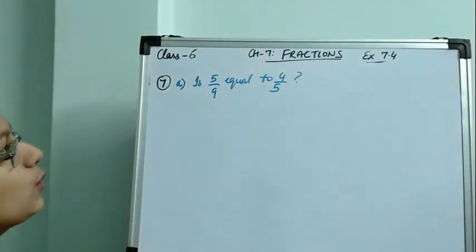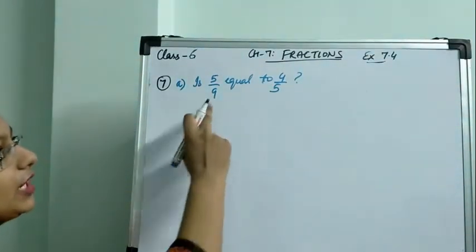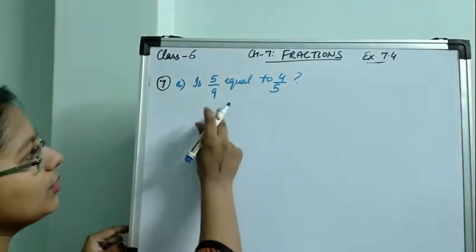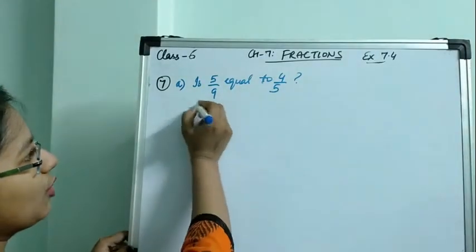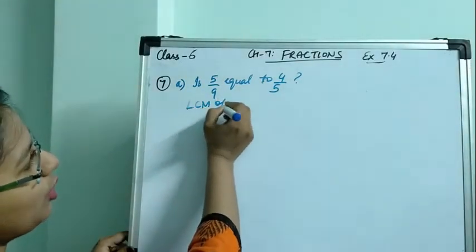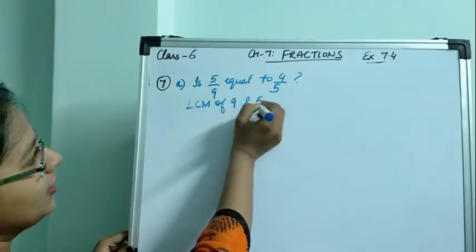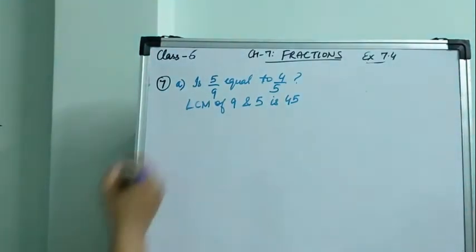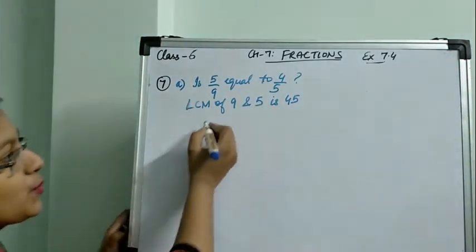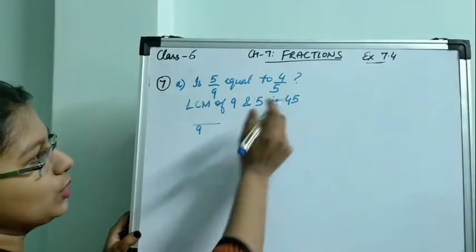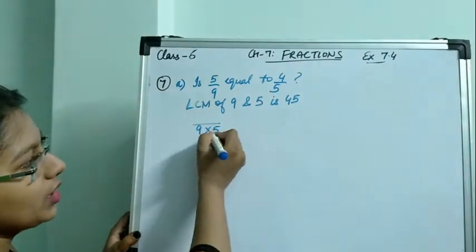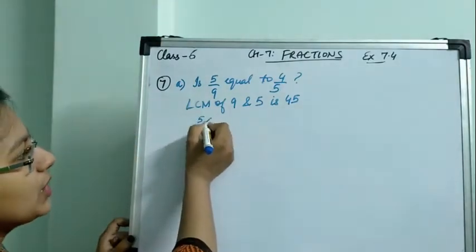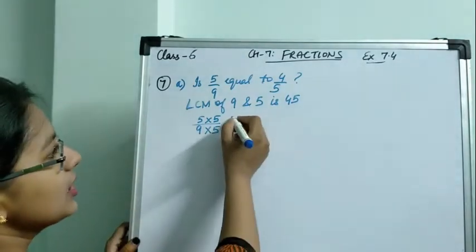To check whether they are equal or not, first of all we have to make the denominators equal. For making the denominator equal, we will find LCM of 9 and 5. LCM of 9 and 5 is 45. To make denominator 9 equal to 45, we multiply by 5.